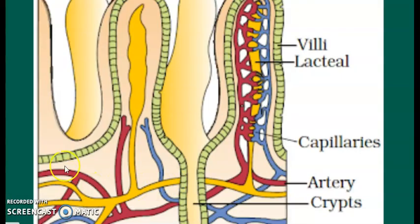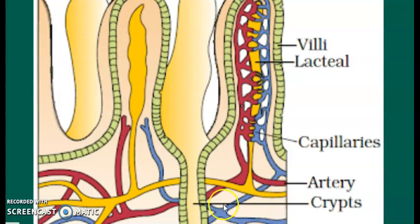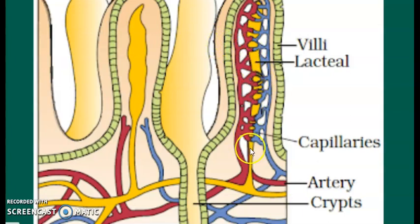This is the structure of the villi. You can see each villus has capillaries. The dark purple color represents an artery, and the blue color represents a vein. The junction of the artery and the vein is called the capillary. The nutrients enter the intestine and move into the villi, where these blood vessels absorb the nutrients.